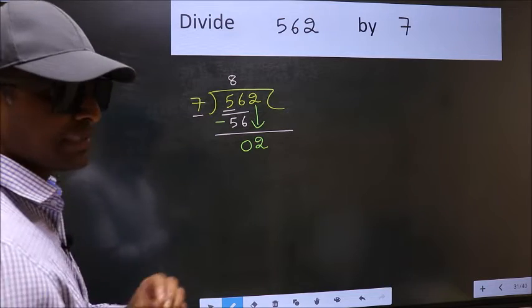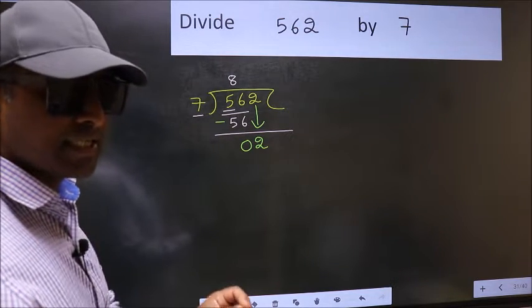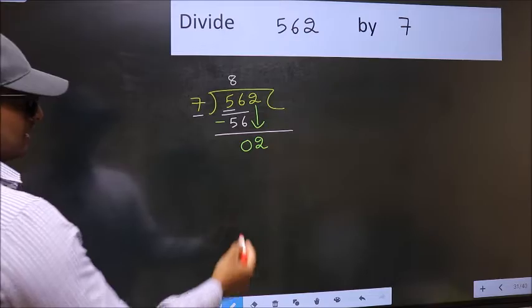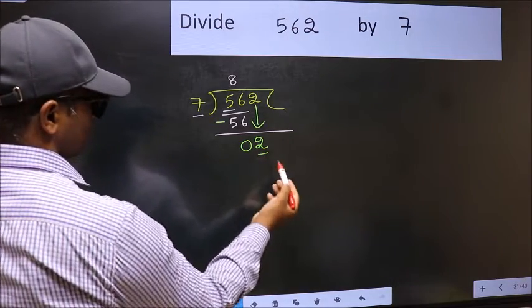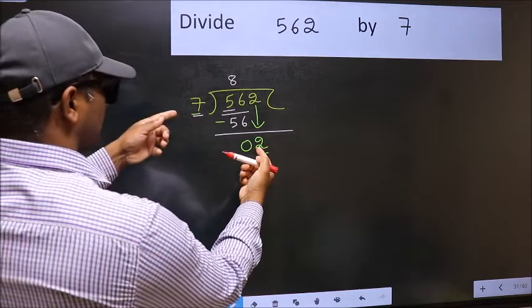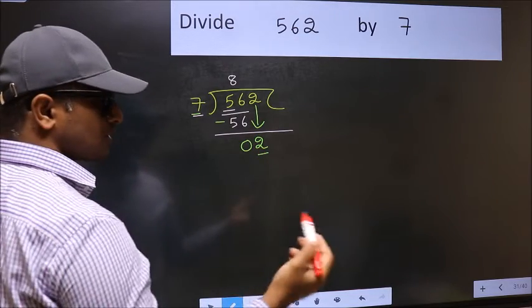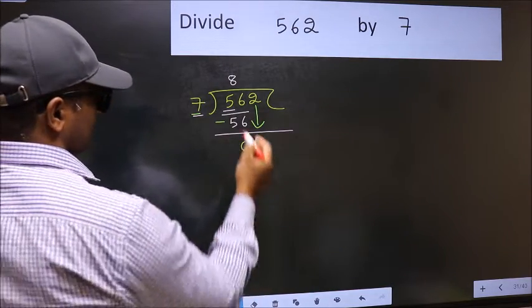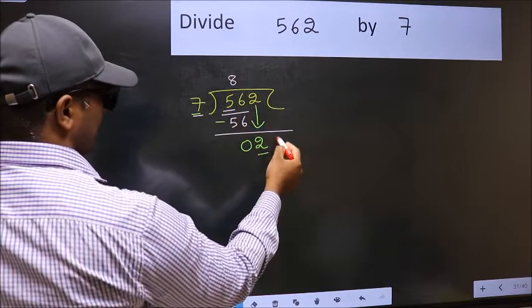And the mistake is this. Here we have 2, and here 7. 2 is smaller than 7. So what many do is, they directly put dot and take 0.